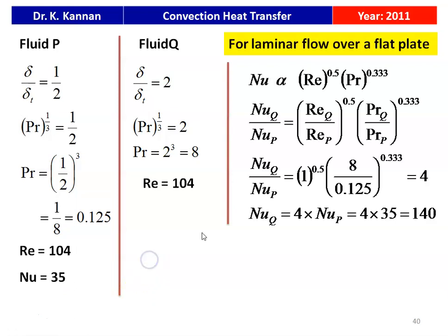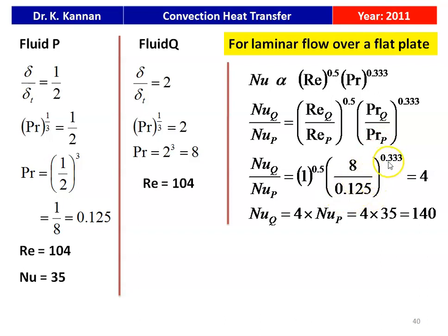For laminar flow over a flat plate, Nu ∝ Re^0.5 × Pr^0.333. Taking the ratio: Nu_Q / Nu_P = (Re_Q/Re_P)^0.5 × (Pr_Q/Pr_P)^0.333. Since Reynolds numbers are equal, that term equals 1. So (Pr_Q/Pr_P)^0.333 = (8/0.125)^0.333 = 64^0.333 = 4. Therefore Nu_Q = 4 × Nu_P = 4 × 35 = 140. For fluid Q: Prandtl number is 8 and Nusselt number is 140.